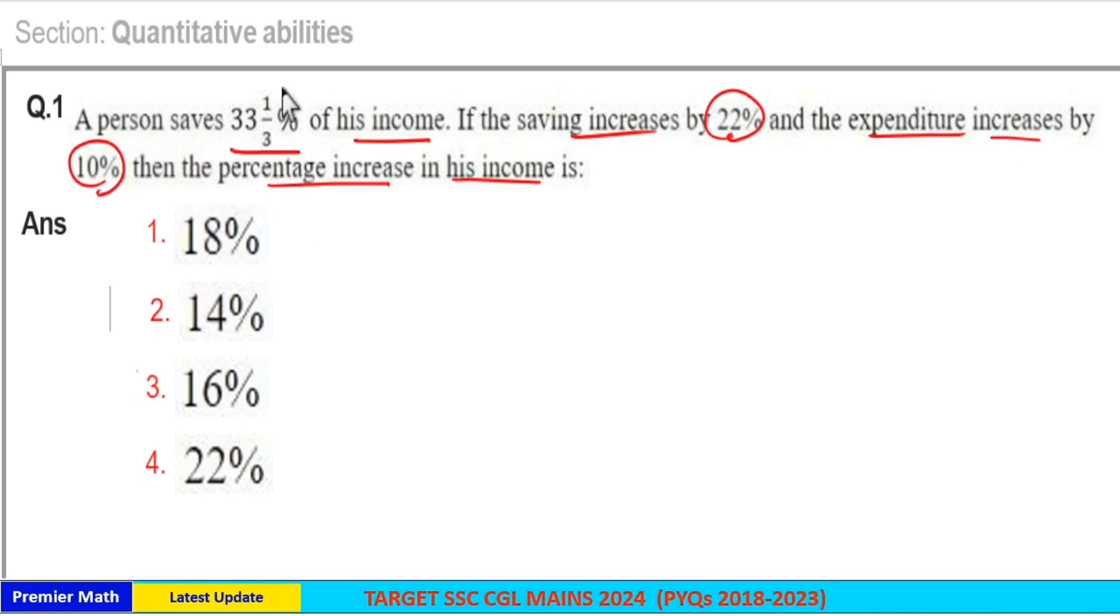33 1/3 percent means 100/3 percent, which is 1/3. So a person saves one-third of his income, meaning 3 parts is the income and 1 part is the savings.